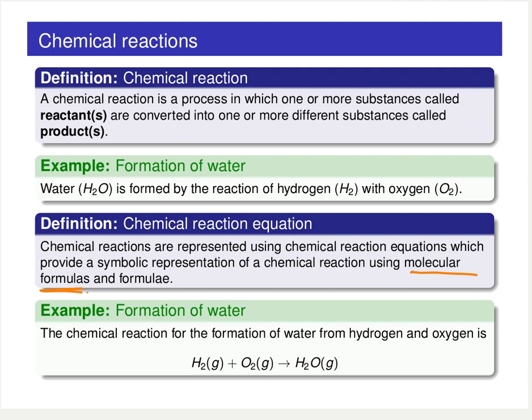And then we're going to introduce some symbolism that allows us to understand what species, what compounds, what molecules are undergoing reaction and what the resulting products are going to be. Here's an example looking again at the formation of water. We write out the molecular formula for each one of the reactants and we separate those molecular formulas using a plus sign. We read this by saying H2 plus O2.